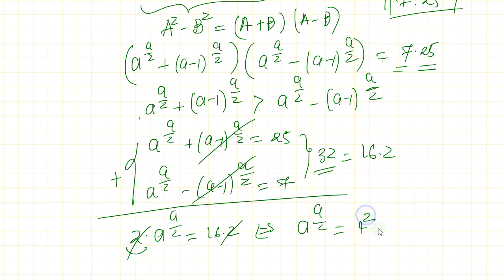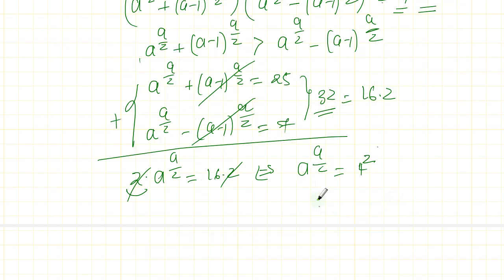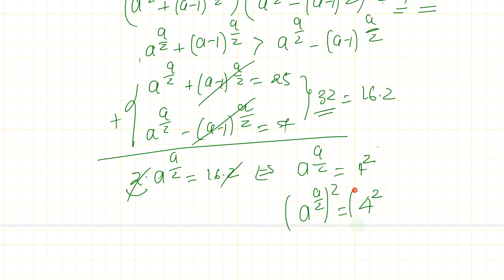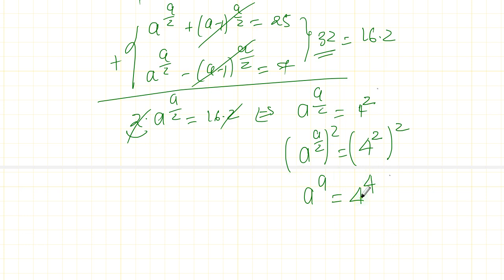16 is 4 to the power of 2. So we have a to the a over 2 equals 4 squared. Squaring both sides gives a to the a equals 4 to the power of 4. By comparison, a here corresponds to 4 here, so a is equal to 4.